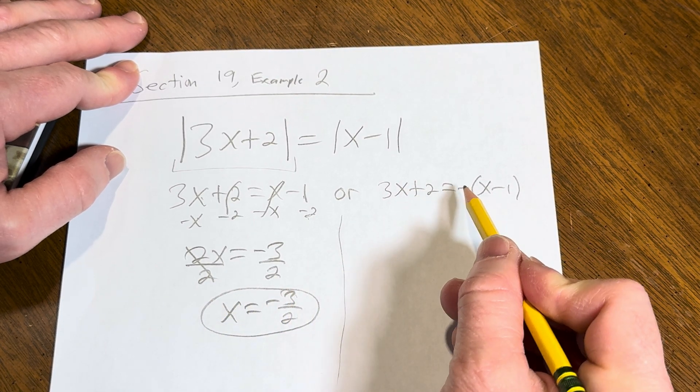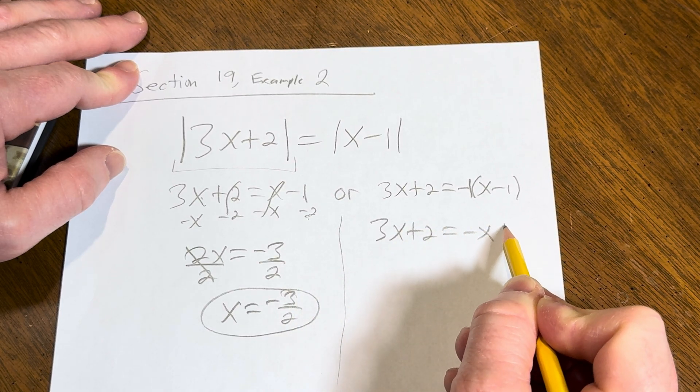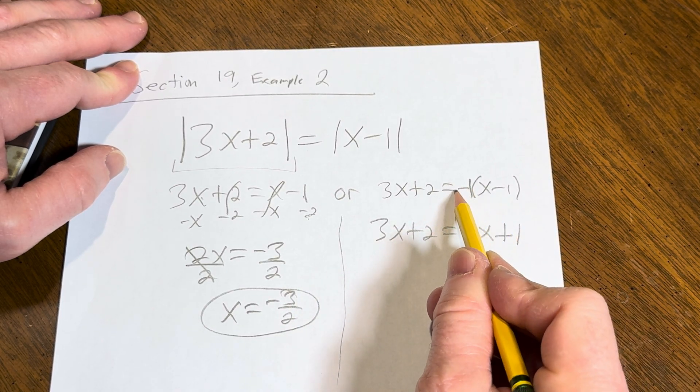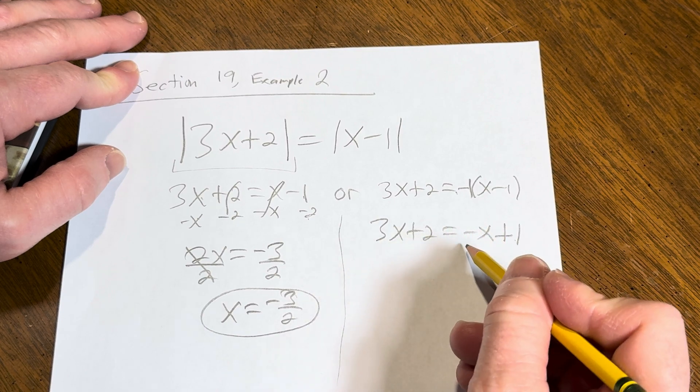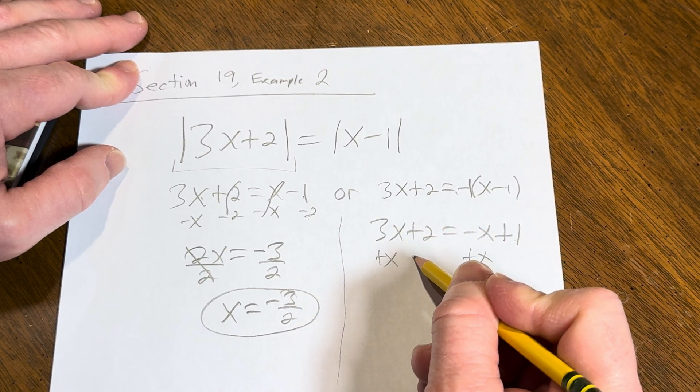Here we'll distribute the negative 1. So we have 3x plus 2 equals negative x plus 1. Negative 1 times 1 is plus 1. Add x, subtract 2.